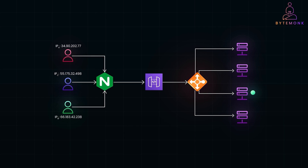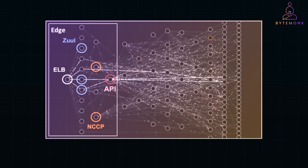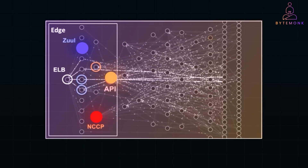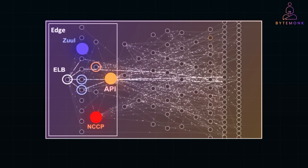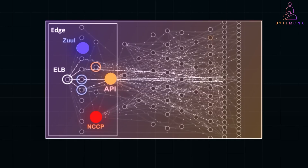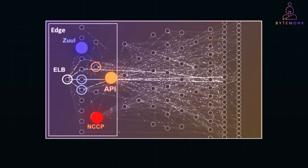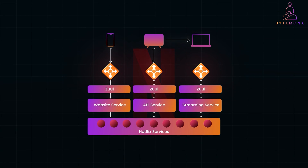Netflix's streaming architecture is an exceptionally large-scale distributed system that needs to handle massive volumes of traffic from all over the world. Given their global user base and vast content library, they rely on sophisticated network infrastructure to ensure reliability, high performance, and seamless user experience. Although Netflix employs multiple architectural patterns and technologies, the concept of reverse proxy is fundamental in several areas. Netflix's initial and well-known approach to routing traffic from clients to backend microservices involved a tool called Zuul, which was an open-source gateway service acting as a reverse proxy.